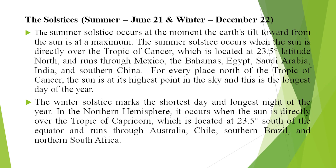The solstices fall in summer and winter seasons, on June 21 and December 22. The summer solstice occurs when the earth's tilt towards the sun is at a maximum, and the sun is directly over the Tropic of Cancer — this is the highest point in the sky and the longest day of the year, with the shortest night. Examples of places experiencing this include Australia, Chile, southern Brazil, and South Africa.